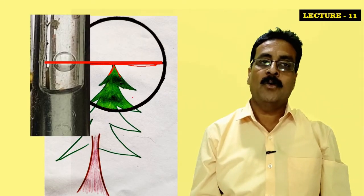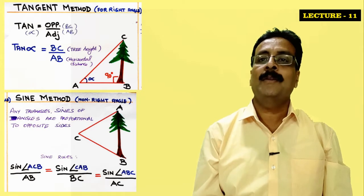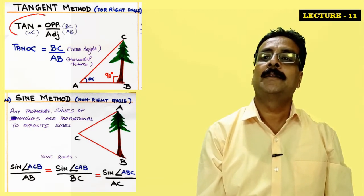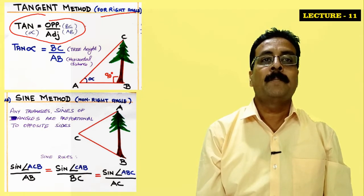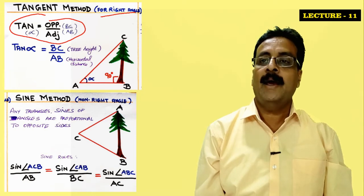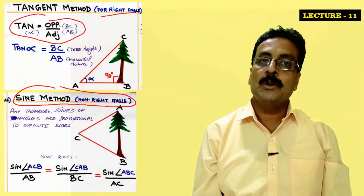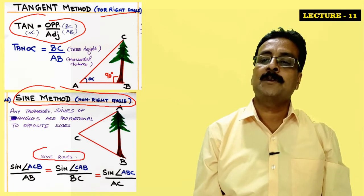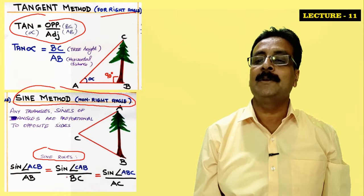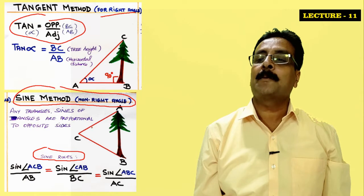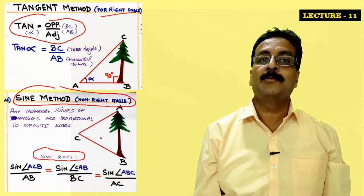Before proceeding, I want to recap the two methods. TOA — tangent — is used for right angle triangles; many trees will be vertical, so we use the tangent method. The sine method is for non-right angle triangles and follows the sine rule: sin(ACB)/AB = sin(CAB)/BC = sin(ABC)/AC — angles are proportional to opposite sides. The sine method is used for leaning trees.